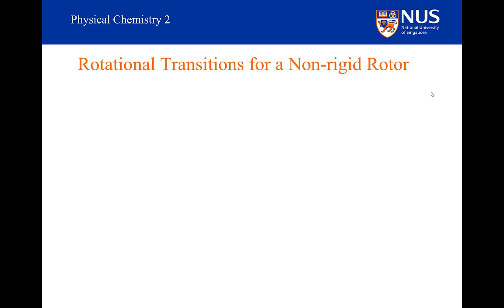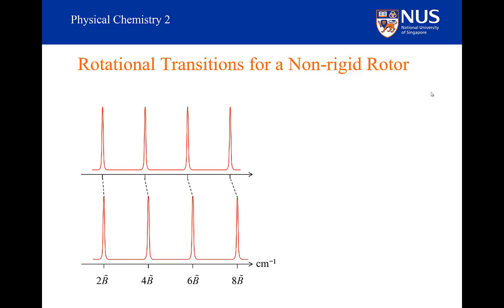In terms of the spectrum, what will this effect look like? This is my rigid rotor spectrum. And this is the spectrum I get for the non-rigid rotor. The lines are at slightly lower frequencies, and the gap is getting smaller as we get to higher J values.